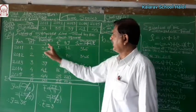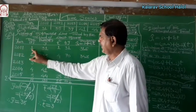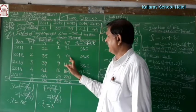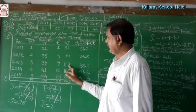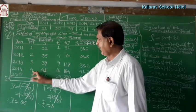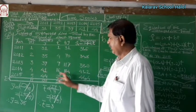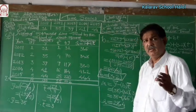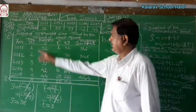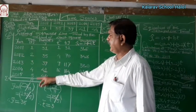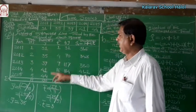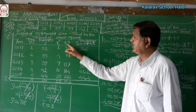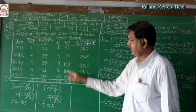Then multiplication T into Y: 31 multiplied by 1 is 31; 35 multiplied by 2 is 70; 39 multiplied by 3 is 117; 41 multiplied by 4 is 164; 44 multiplied by 5 is 220. Then make the summation. Total of T is 15, total of Y is 190, total of T-squared is 55, total of TY (T into Y) is 602.